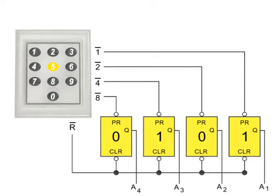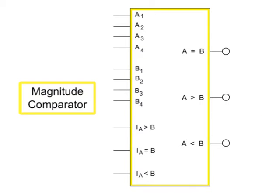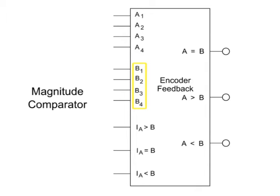After the desired position is received, the magnitude comparator compares the 4-bit input A from the user input to the 4-bit input B of the encoder feedback.